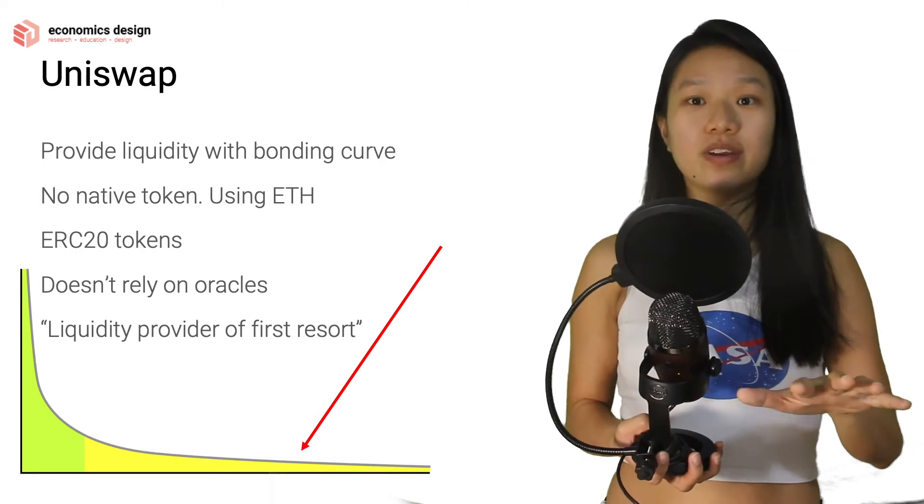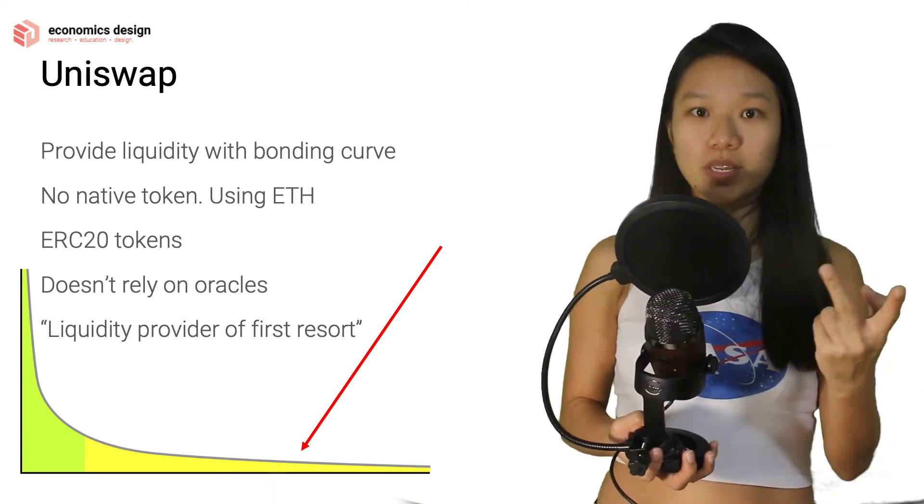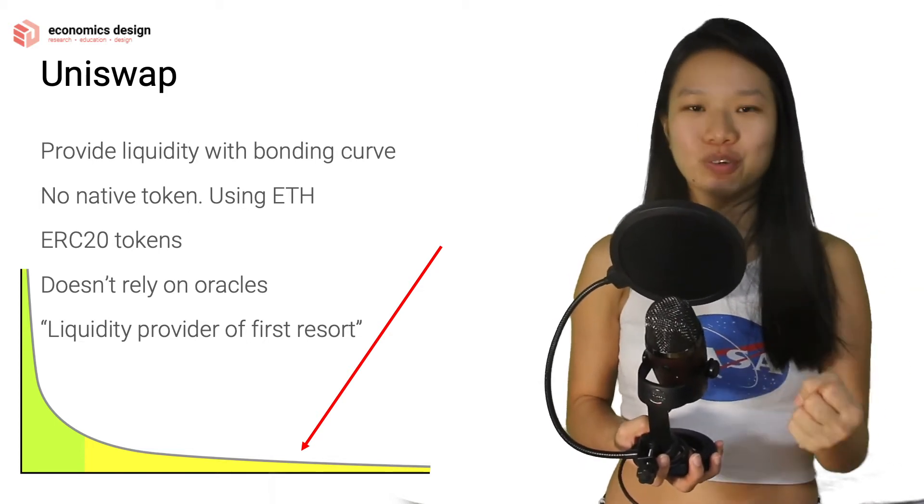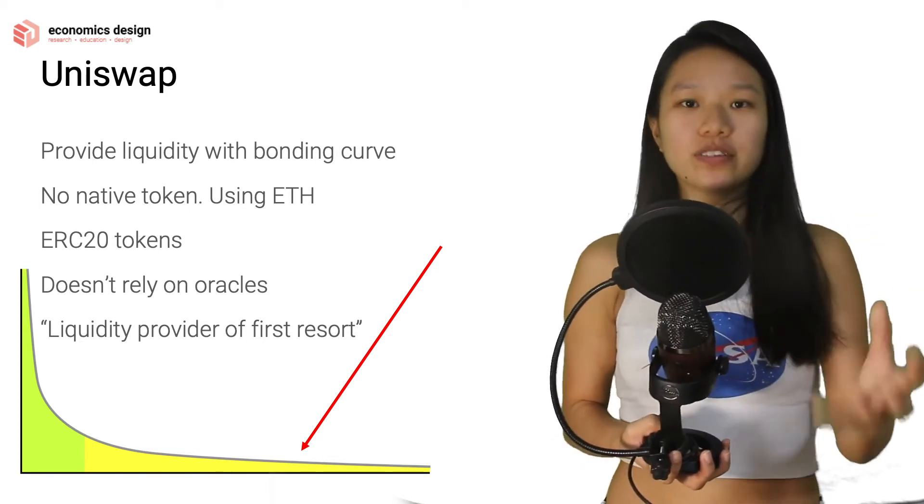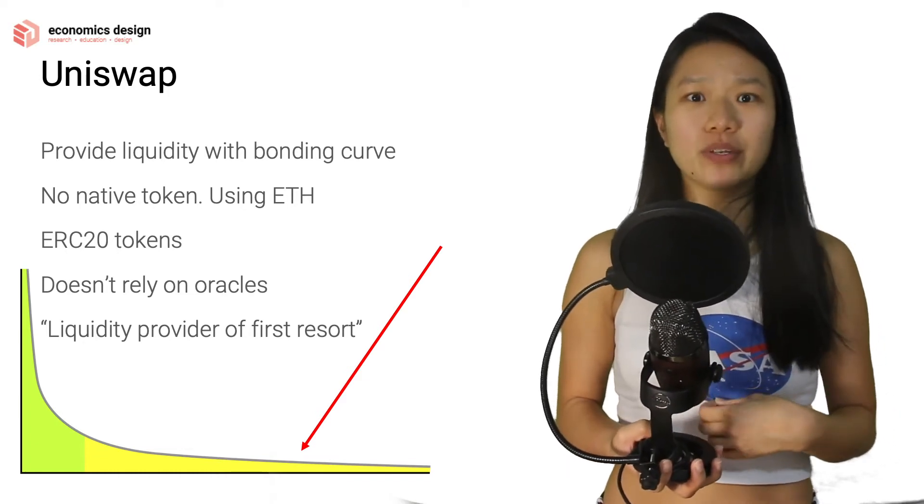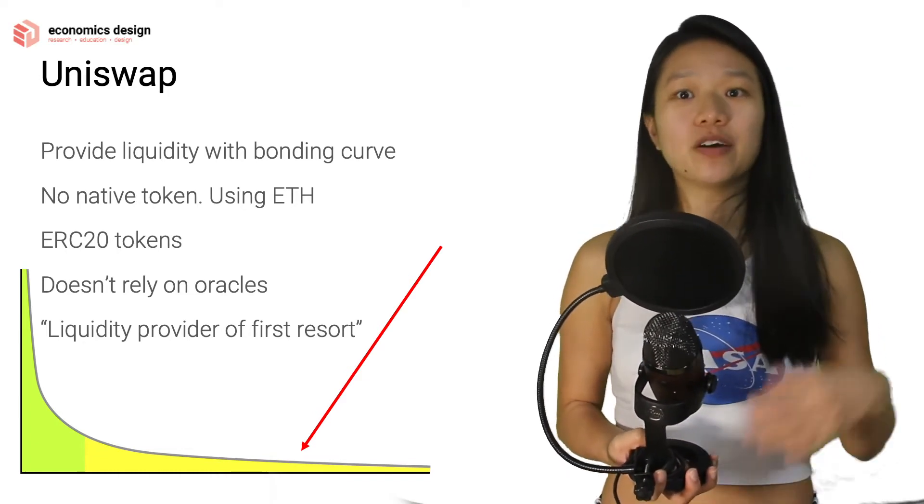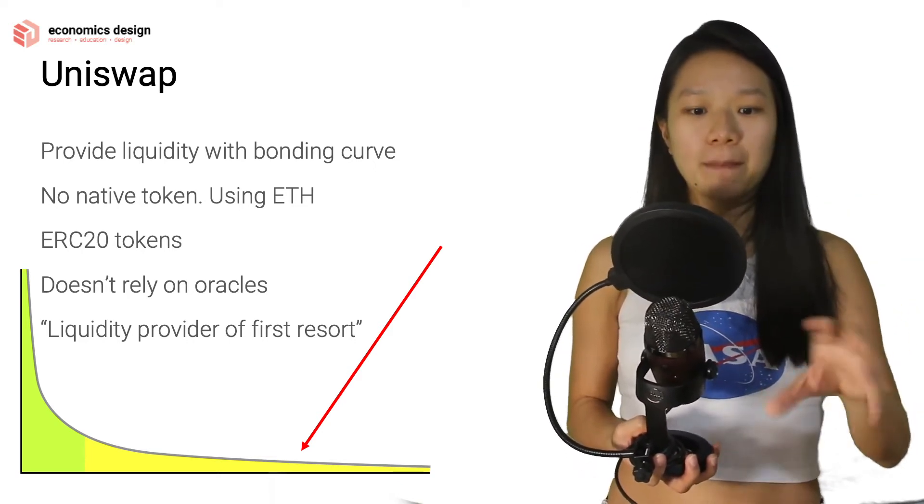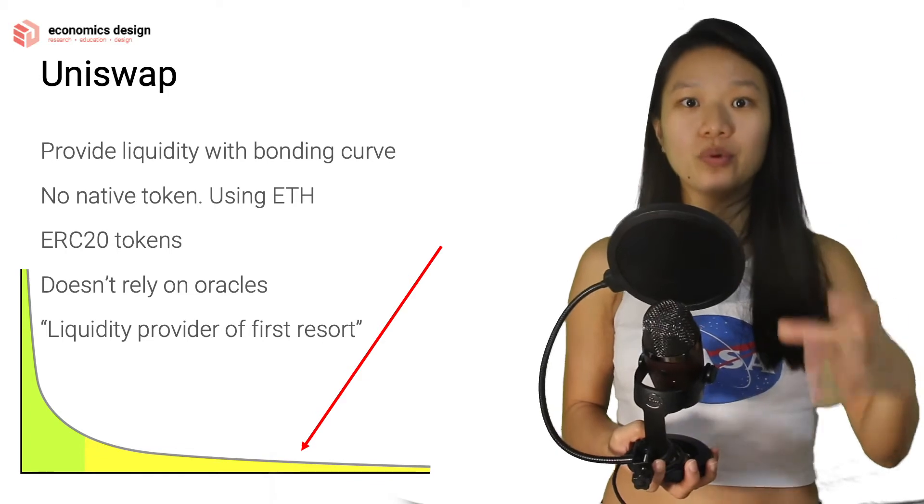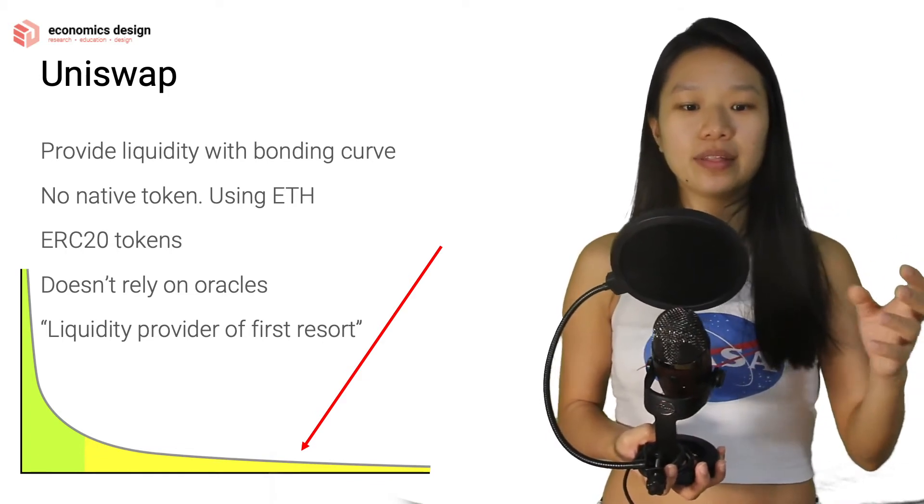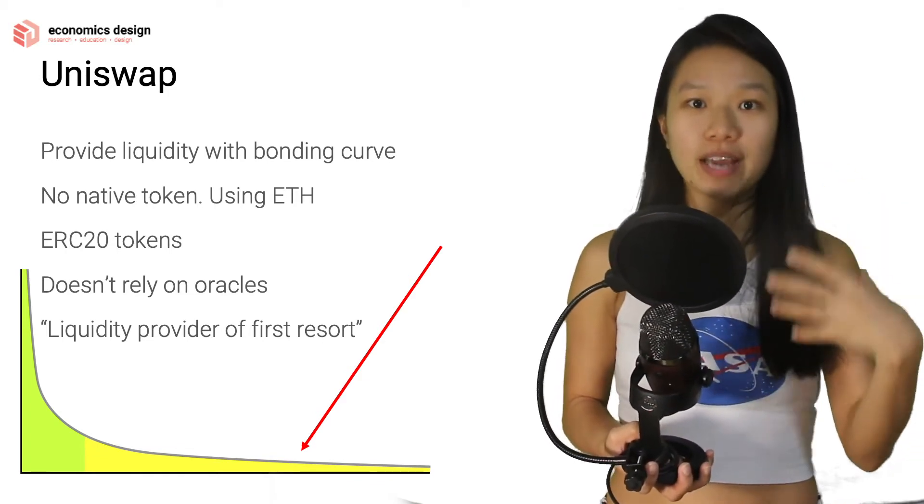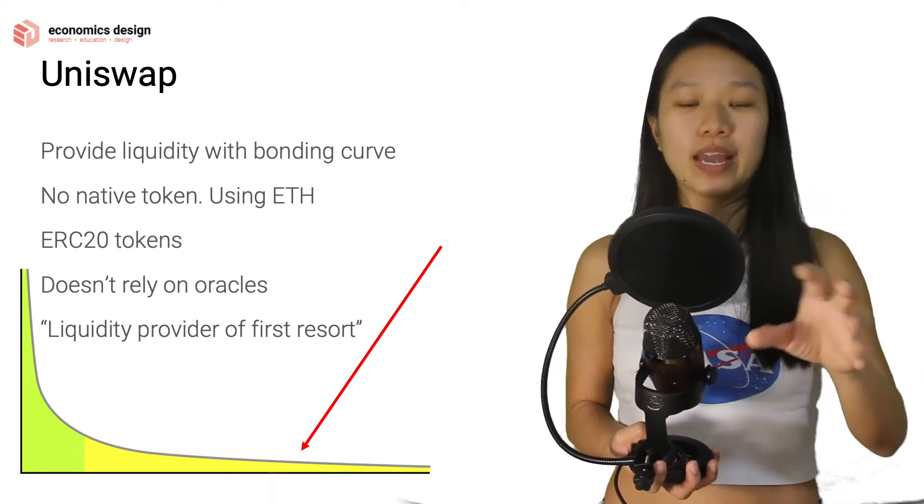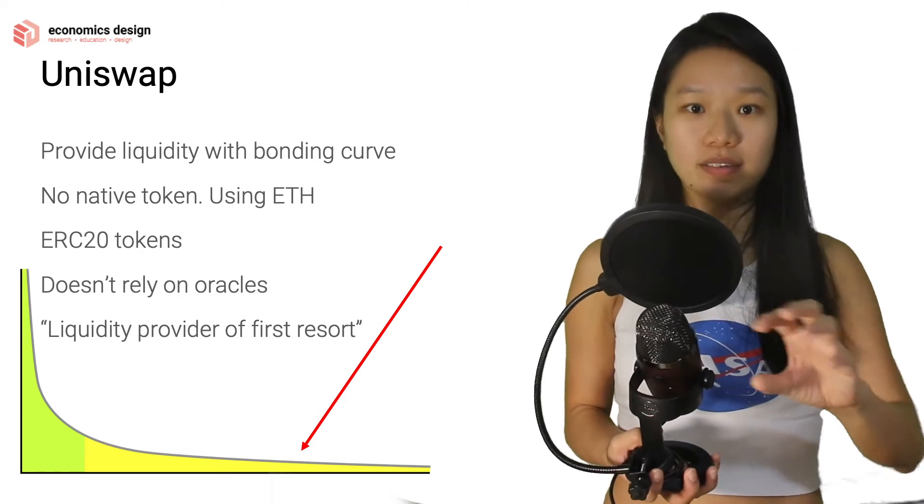In the decentralized, in the DeFi world, things have swapped a little bit. Uniswap is a liquidity provider for first resort. What does it mean? When your tokens are in the long-tail, so Lisa's tokens, not a lot of people are going to trade. It's not going to be listed on Binance, but a few people want to trade for some reason. And then I can provide liquidity by having a Lisa token pool in Uniswap, and I am the first provider of the liquidity, so liquidity provider of the first resort for Lisa token. And you can do that in all these decentralized liquidity pools.